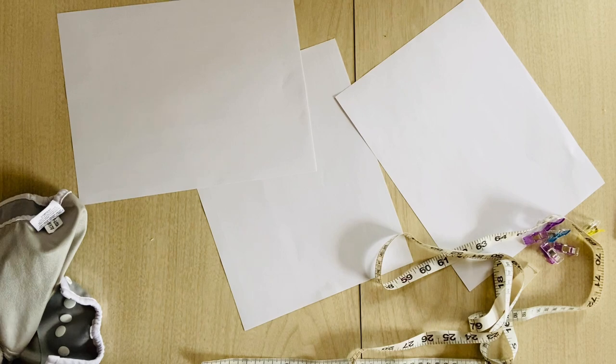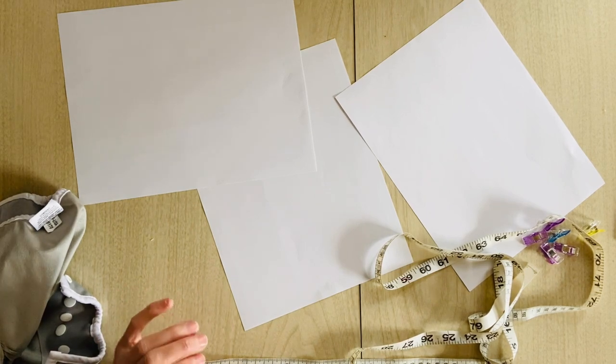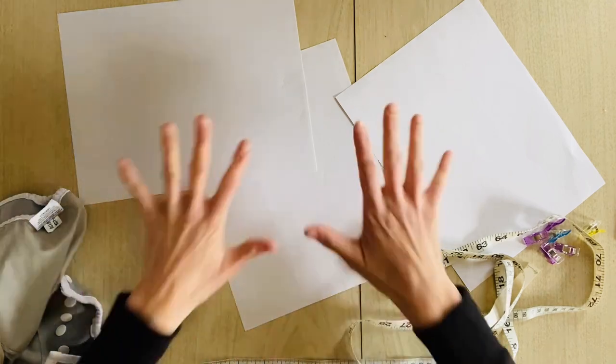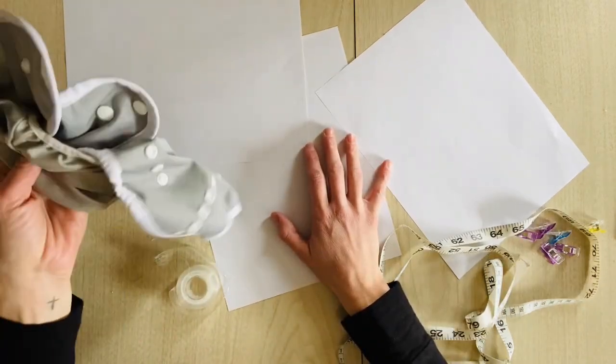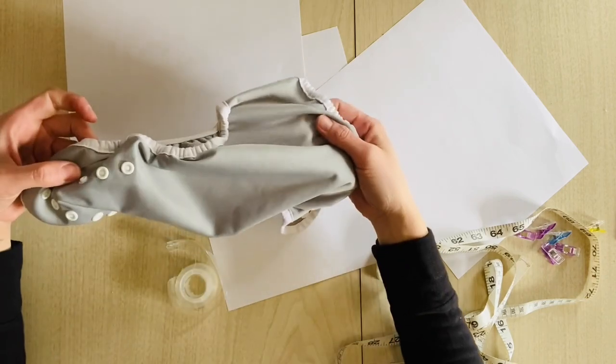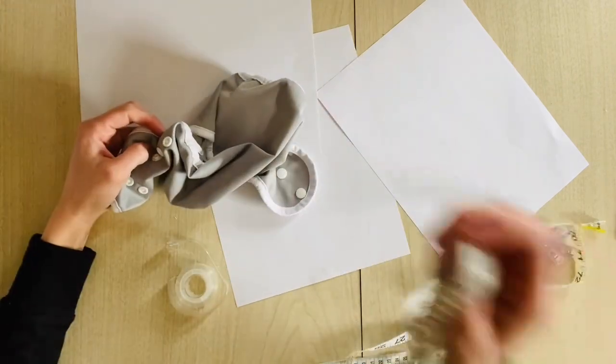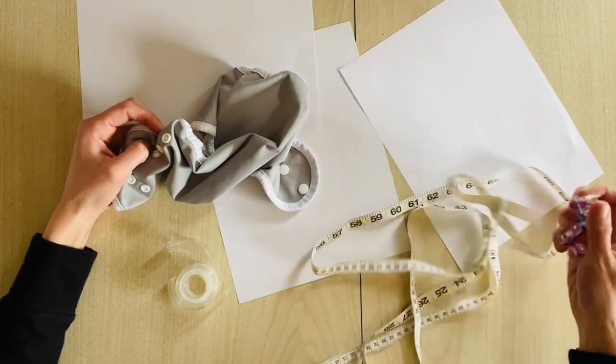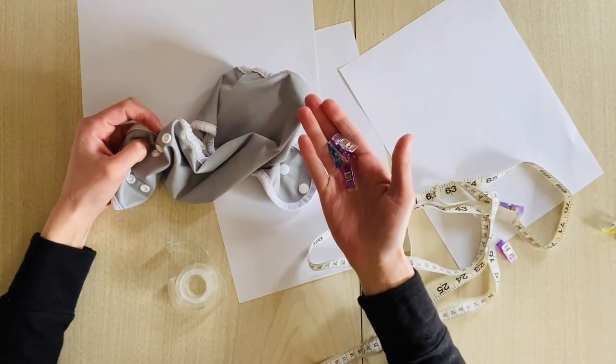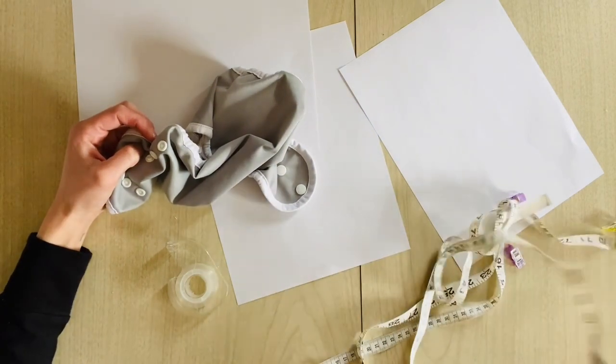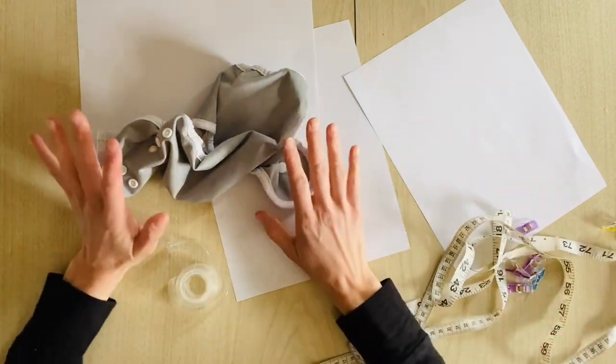Okay, so in order to make a pattern using an existing product you're going to need paper and tape. Unless you have a really giant piece of paper, you're going to need the product that you're going to trace, a tape measure, and some clips. If you don't have clips, you could use pins or clothespins or something.